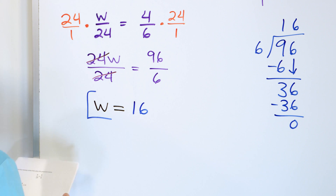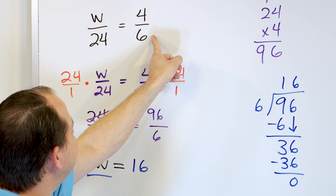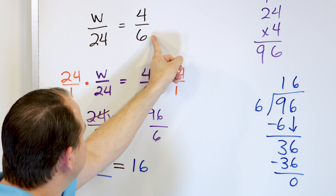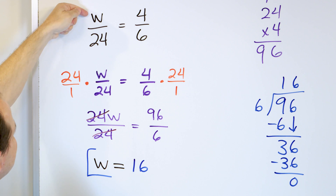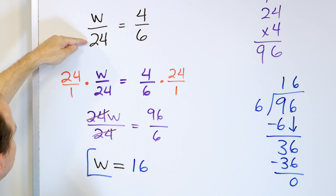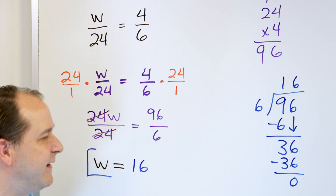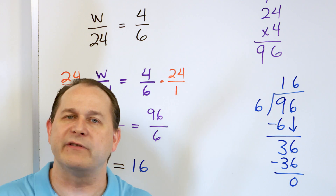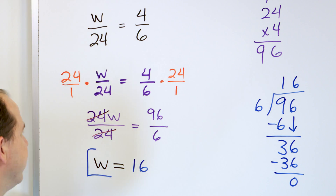What we're basically saying is four as it relates to six — the only number that works up here is 16 as it relates to 24. So 16 is less than 24, just like four is less than six, and the relationship between the numbers is the same because the ratios are the same.